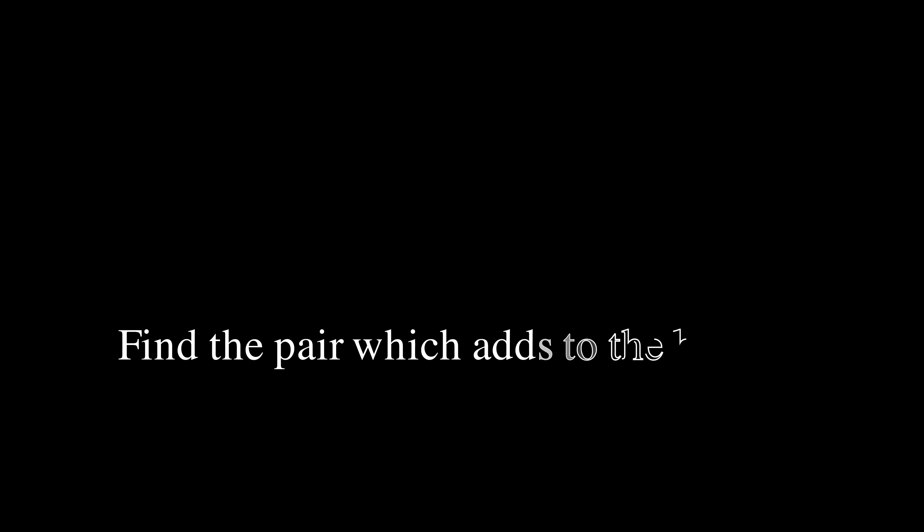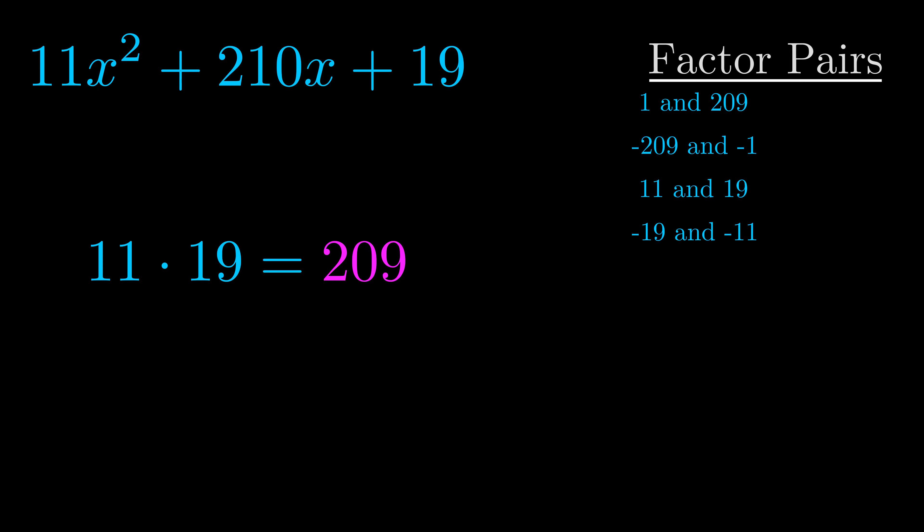The b value is the coefficient on the x term. That's the middle term, the one that we haven't done anything with yet. And really this is the only factor pair that we need.